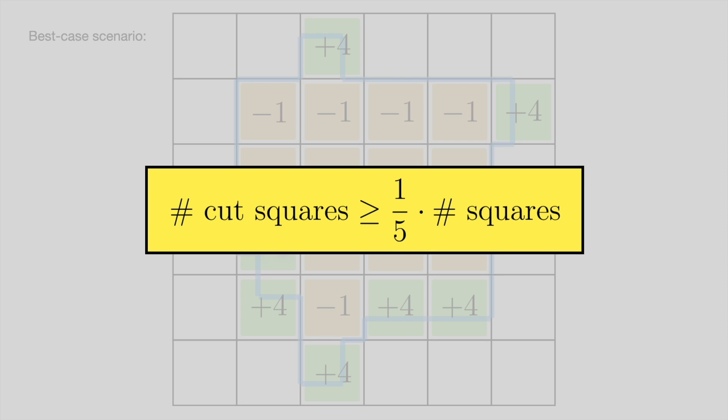This means that for a majority-minority district, at least a fifth of the squares it touches need to be cut squares. While this requirement might seem harmless, when enough squares are in play, this is what forces the district to look strange.